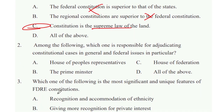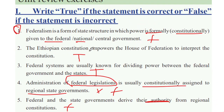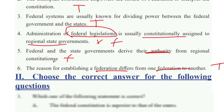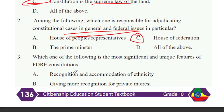Among the following, which one is responsible for adjudicating constitutional cases in general federal issues? The general federal issue is handled by the Supreme Court of the Land. The Constitution is the Supreme Law of the Land, and the Supreme Court serves as its interpreter.